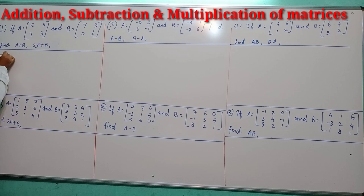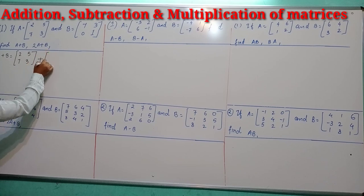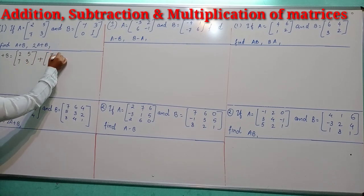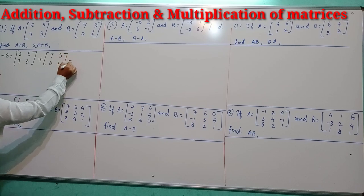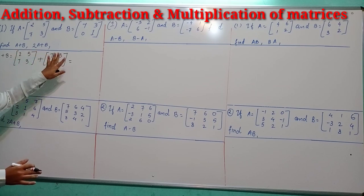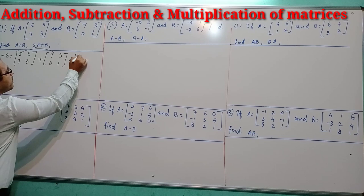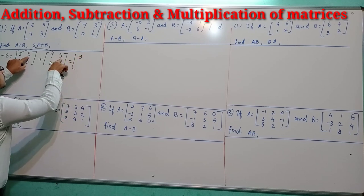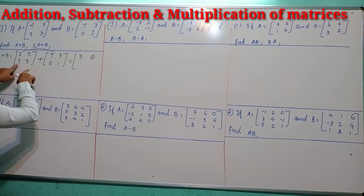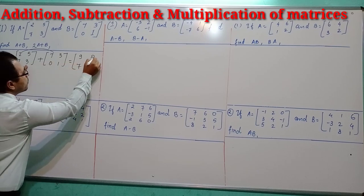A plus B: write down matrix A plus B as [2, 7; 5, 3] plus [7, 0; 3, 1]. Now just add the corresponding elements: 2 plus 7 is 9, 5 plus 3 is 8, 7 plus 0 is 7, and 3 plus 1 is 4. So A plus B equals [9, 7; 8, 4].